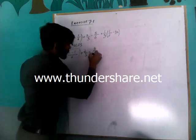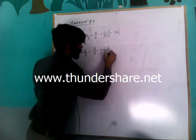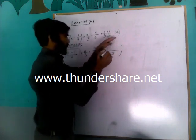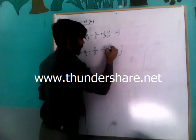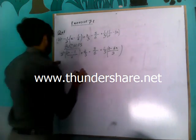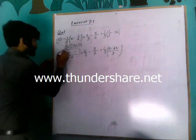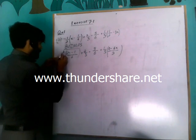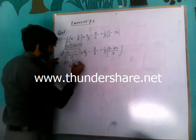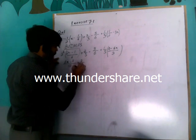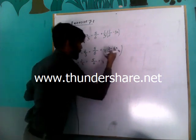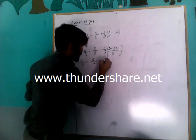Now we will solve the bracket. 2 will come as LCM. 2 divided by 2 gives 1, and 1 multiplied by 1 gives 1, then minus 1. Then 2 directly multiplies with 3, giving 6x. Now we will multiply 1 over 2 inside, then 6x minus 1 over 12 will come, plus 2 over 3 is equal to 5 over 6 plus 1 over 3.